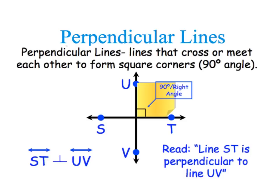They cross or meet each other to form square corners, which is a 90 degree angle, also called a right angle. And you can see that we write that like this with this little part of a box right here that shows the right angle.